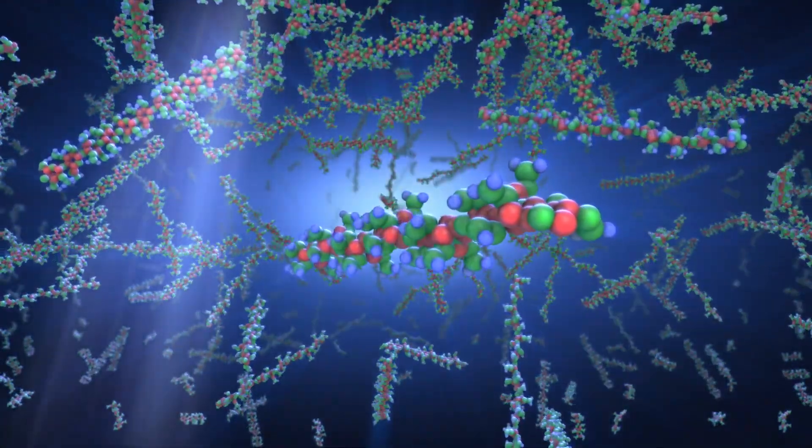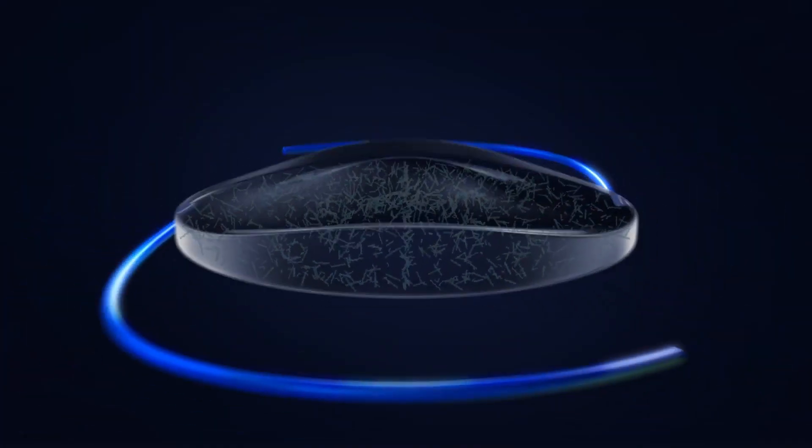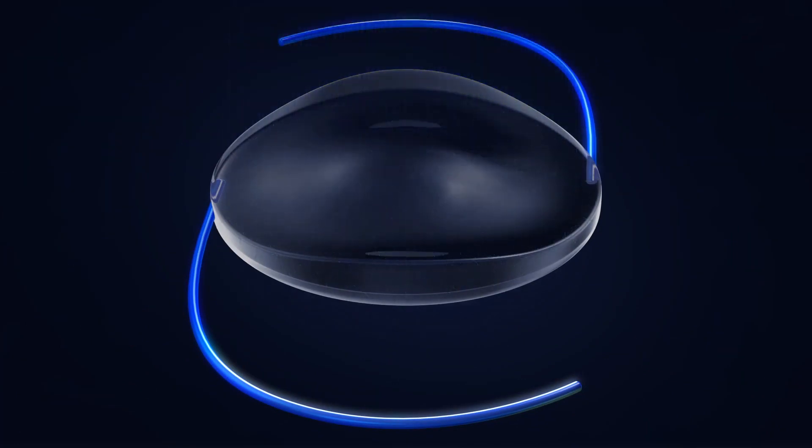When the adjustment process has been completed to the satisfaction of doctor and patient, the entire lens is exposed to the treatment light to polymerize all remaining macromers, effectively locking them in place to prevent any further changes.